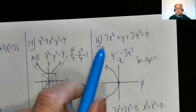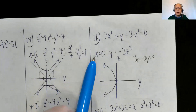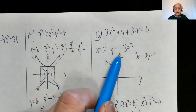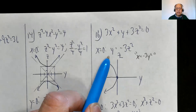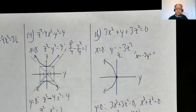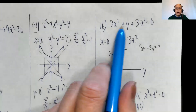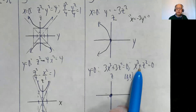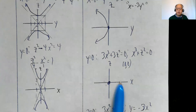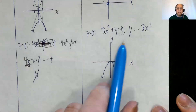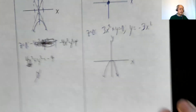Problem 16: For the YZ plane (X = 0): the equation becomes Y = −3Z² — a parabola opening left in the YZ plane. For the XZ plane (Y = 0): 3X² + 3Z² = 0, giving X² + Z² = 0 — only the origin. For the XY plane (Z = 0): 3X² + Y = 0, so Y = −3X², a parabola which opens down.